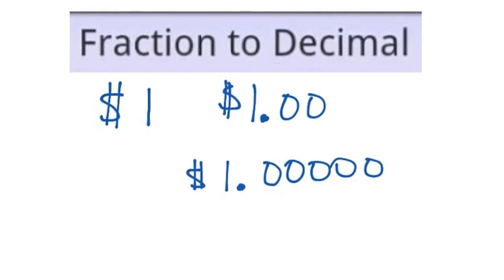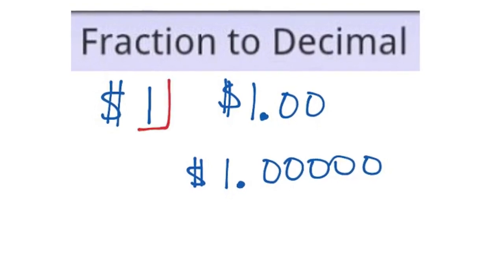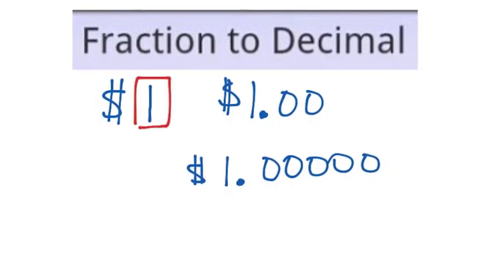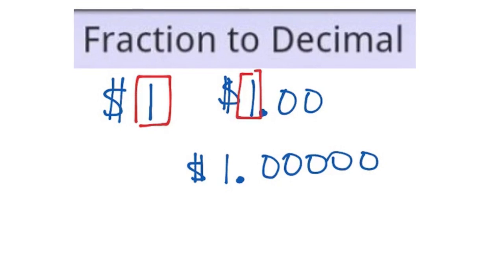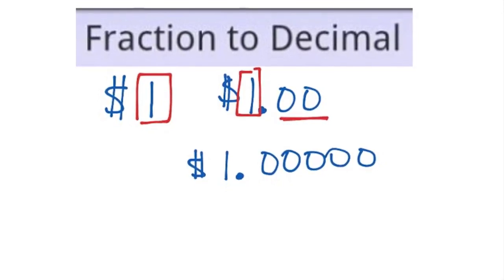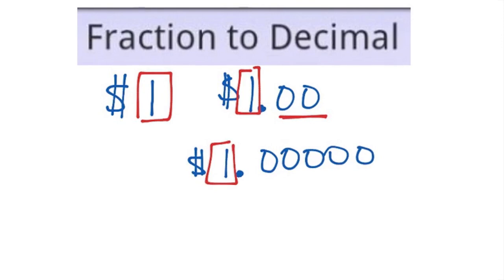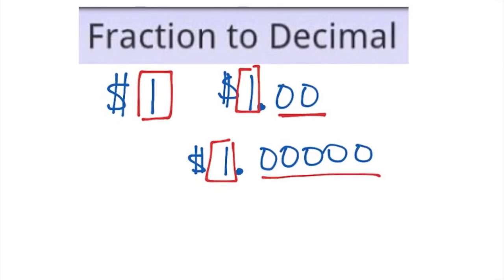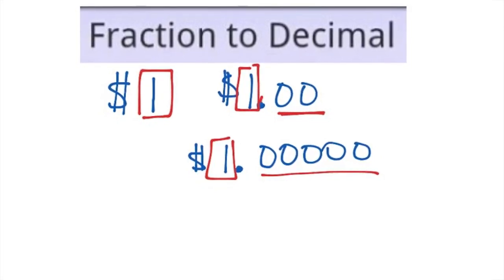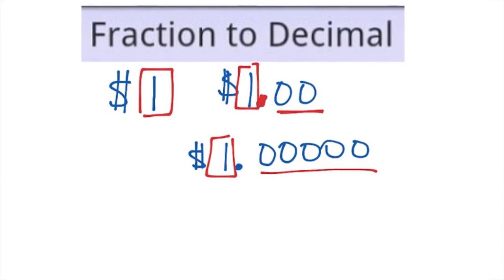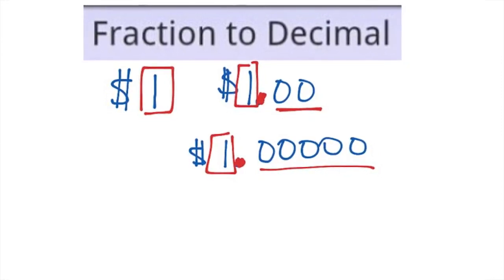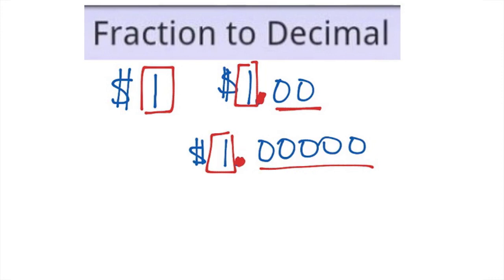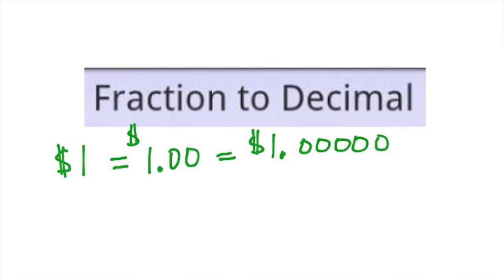So my point here, boys and girls, is that if you look at the whole number, I have one whole. Over here, my whole number is one whole. I have zero change. Over here, I have one whole dollar with zero change. Just because I add the decimal and the zeros, does that mean that I'm changing the value? No. All I did was change the way it looks.